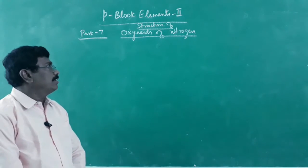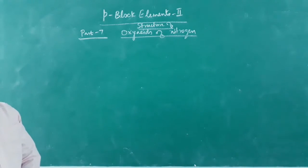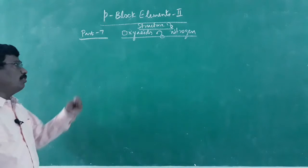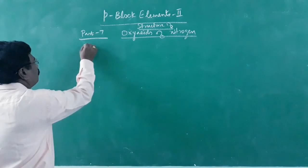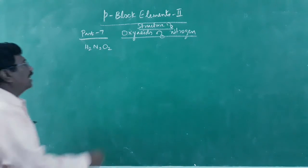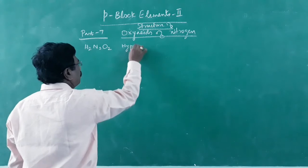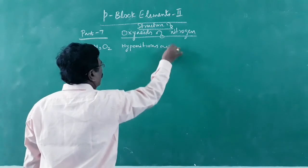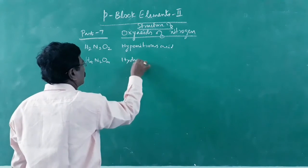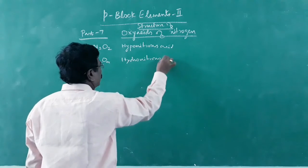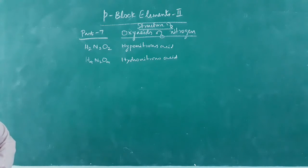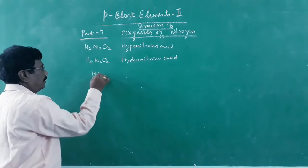Dear students, now it is time for us to know the structures of different oxyacids of nitrogen. Earlier we have seen oxides of nitrogen, now oxyacids of nitrogen. The few oxyacids are: H2N2O2 is known as hyponitrous acid, H4N2O4 is hydronitrous acid, and HNO2 is nitrous acid.